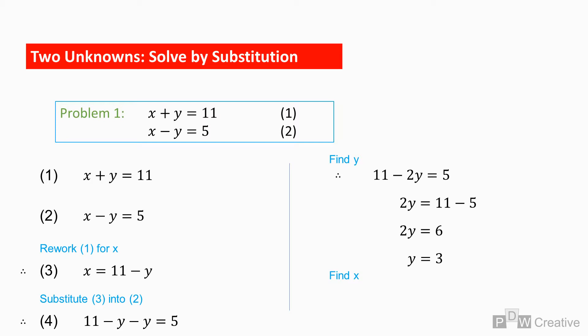So with the first unknown found, we now have all the information needed to find the second. In this instance, we can use equations one, two, or three to find x. Using equation three, x can be found by deducting three from 11, and so x equals 8. And that's a basic solution using the substitution method.